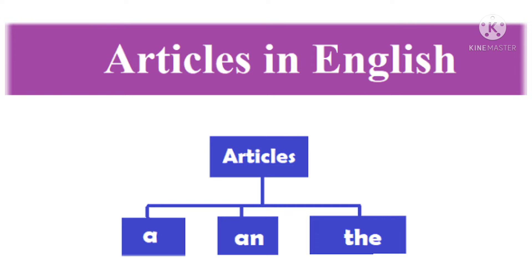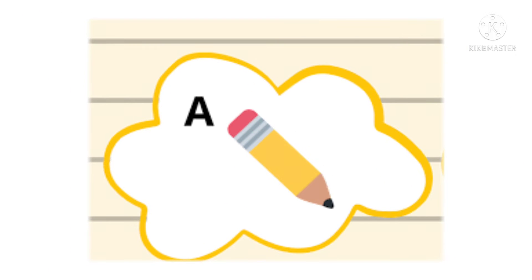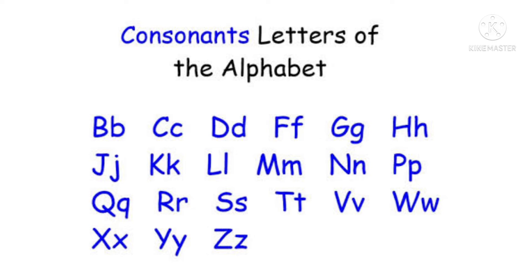'A' is used before a word that starts with a consonant, and 'an' is used before a word that starts with a vowel. 'The' is used in front of a noun to describe someone or something specific or unique. That is called articles. Let's see with examples.